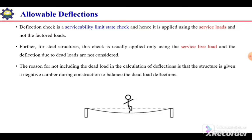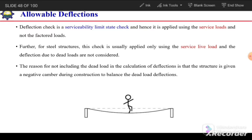If the deflection of the beam is excessive — meaning more than the allowable deflection — then we can say the beam is unsafe or failing. The actual deflection should be less than the allowable deflection. This deflection check is a serviceability limit state check, applied at service loads instead of factored loads.